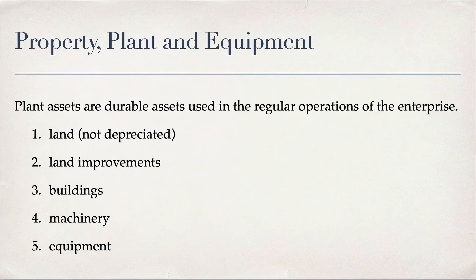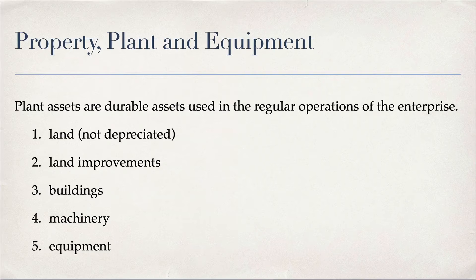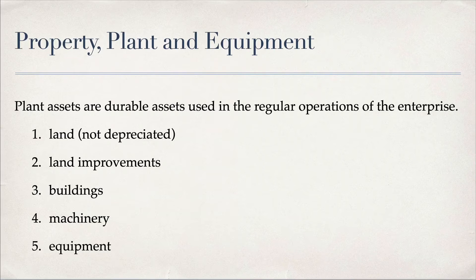Property, plant, and equipment — also called plant assets or fixed assets — are long-term assets with a physical characteristic used to run the business. This category includes land, buildings, equipment, machinery, furniture, and land improvements like fences or parking lots. All of these assets are depreciated except for land.